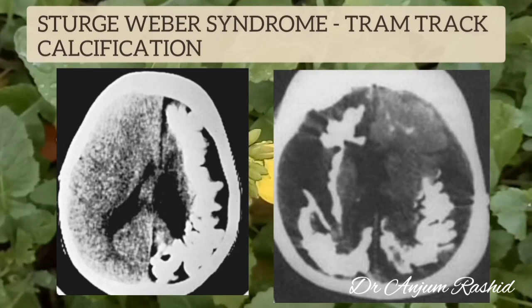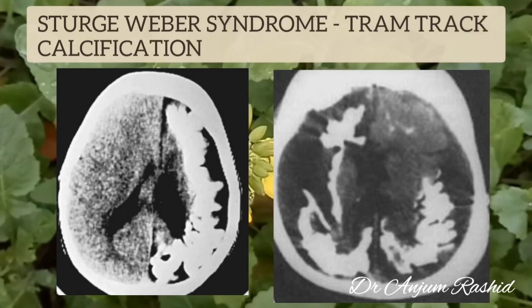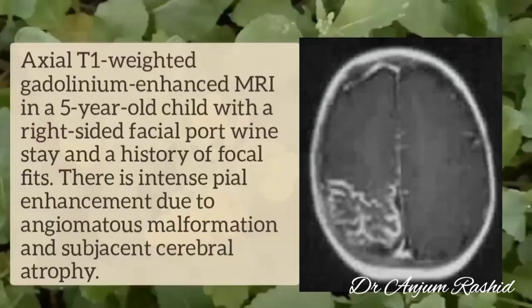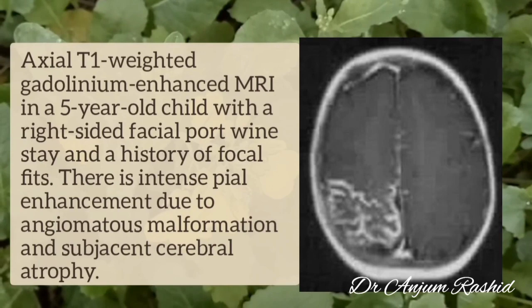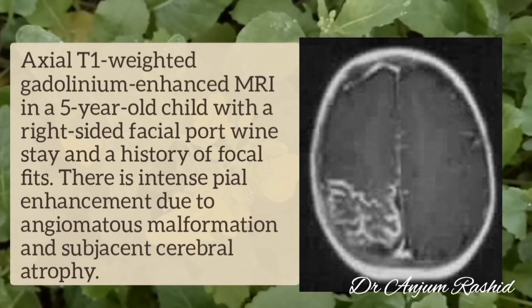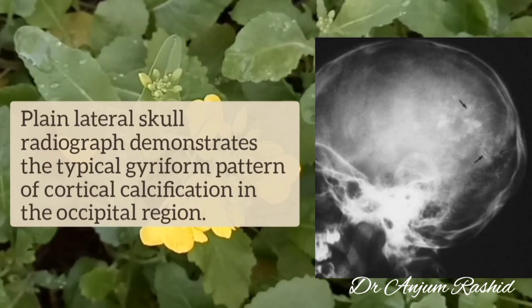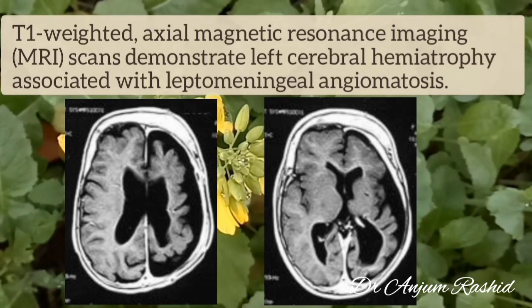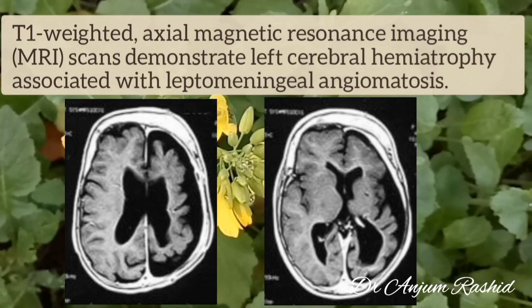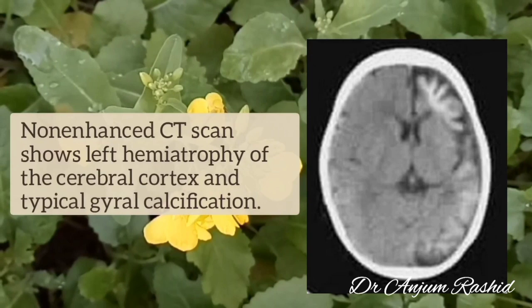These are CT scans of two children with Sturge-Weber syndrome where tram-track calcification is clearly seen. This is an axial T1-weighted gadolinium-enhanced MRI in a 5-year-old child with a right-sided facial port-wine stain and a history of focal fits, showing intense pial enhancement due to angiomatous malformation and cerebral atrophy. This is a plain lateral skull radiograph showing the typical gyreform pattern of cortical calcification in the occipital region. These are T1-weighted axial MRI scans showing left cerebral hemiatrophy associated with leptomeningeal angiomatosis, and a non-enhanced CT scan showing left hemiatrophy of the cerebral cortex with typical gyral calcification.